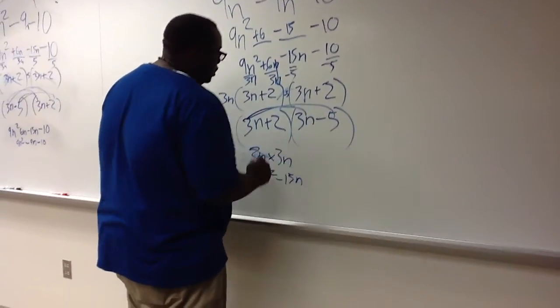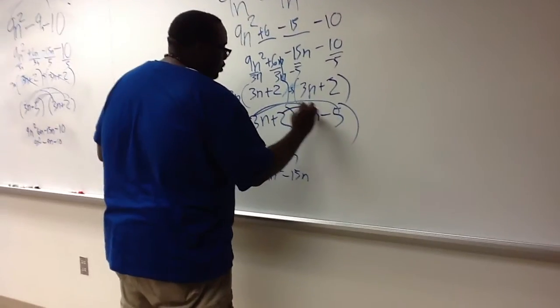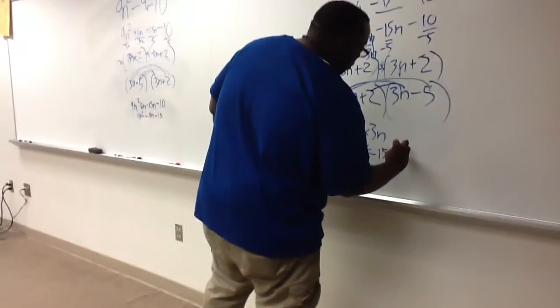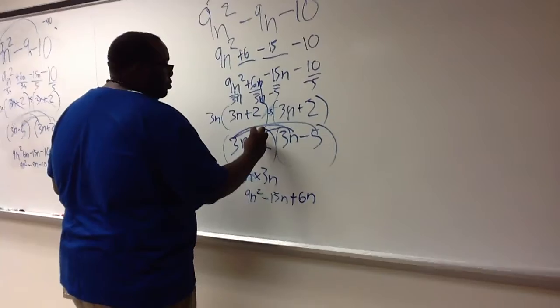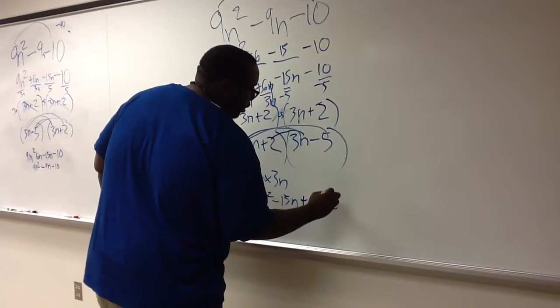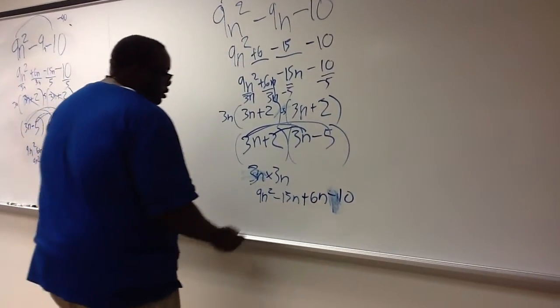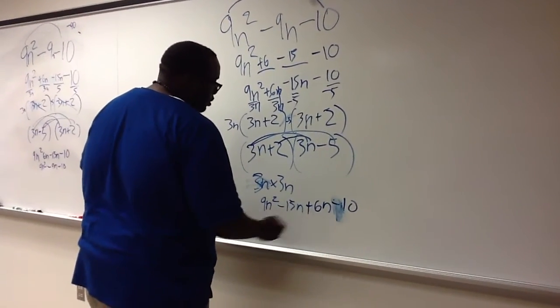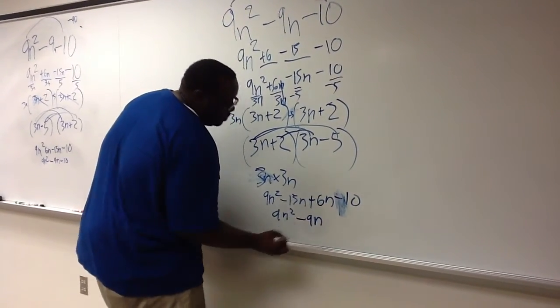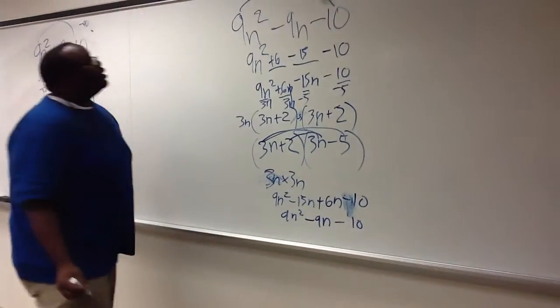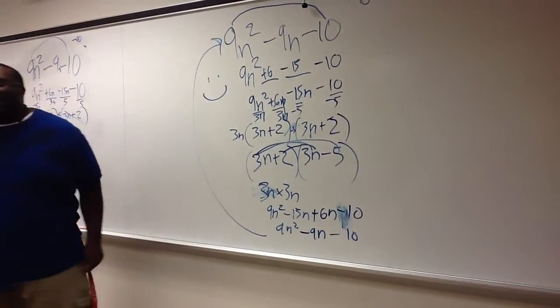Your inside terms will be positive 6n, and your last terms will be 2 times negative 5, which will equal negative 10. So if you add negative 15n and 6n, what do you have? Negative 9n. 9n squared minus 9n minus 10. Does that look the same there? It sure does.